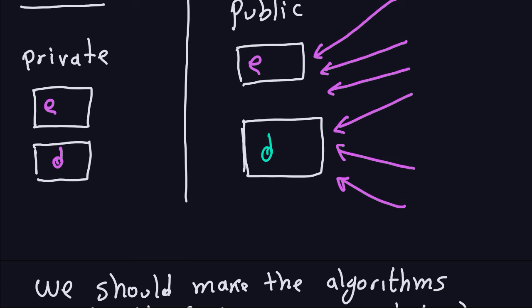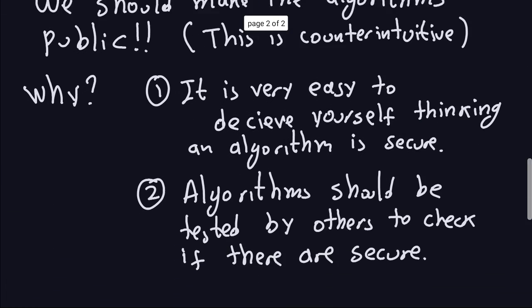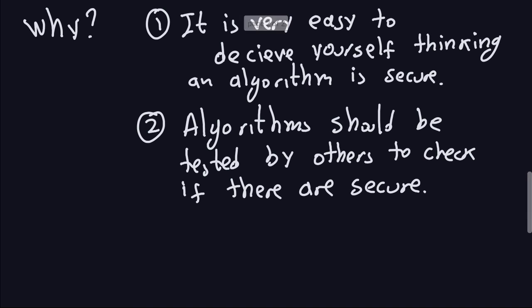The DVD encryption, for example, a long time ago was broken because it was private. So once somebody reverse-engineered that DVD encryption, that was it. That was very easy to crack. So this is one important principle, and I'm going to stop with that principle here for the introduction to modern cryptography.